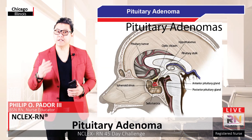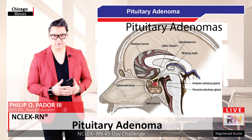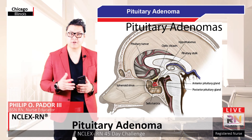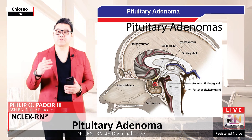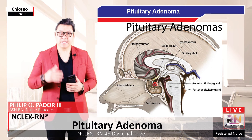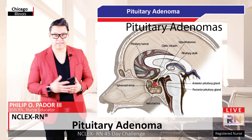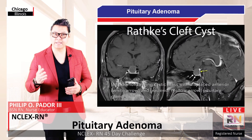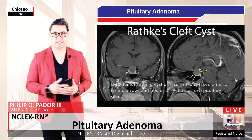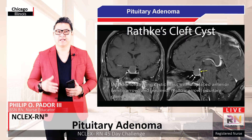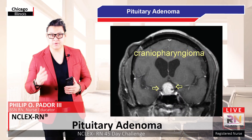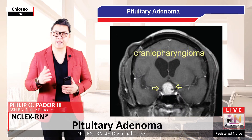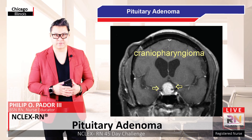Here are MRIs of common parasellar tumors. The first image is of a pituitary adenoma with the tumor shown in yellow and the gland in green. A Rathke's cleft cyst is shown with the gland pushed around the internal cyst. A large craniopharyngioma is shown sitting above the pituitary gland and below the hypothalamus.